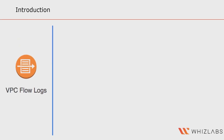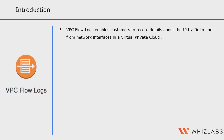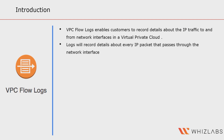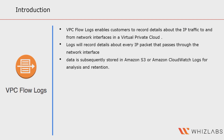VPC Flow Logs is a feature of Amazon Web Services that enables customers to record details about the IP traffic to and from network interfaces in a virtual private cloud. When enabled, VPC Flow Logs will record details about every IP packet that passes through the network interface, such as source and destination IP addresses, source and destination ports, and protocols. This data is subsequently stored in Amazon S3 or Amazon CloudWatch Logs for analysis and retention.